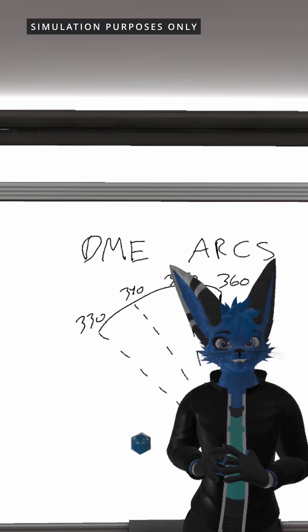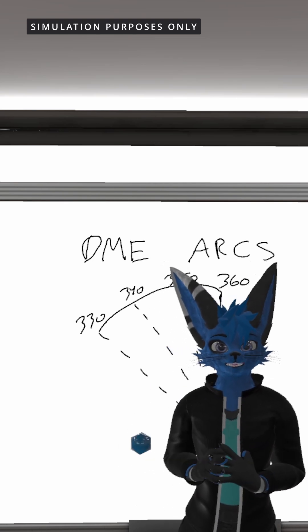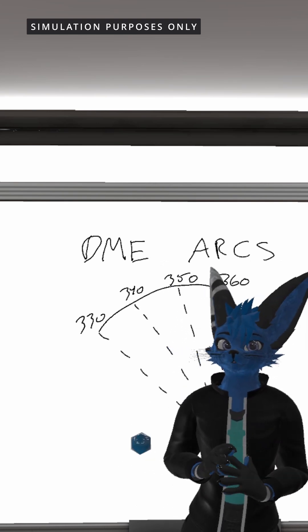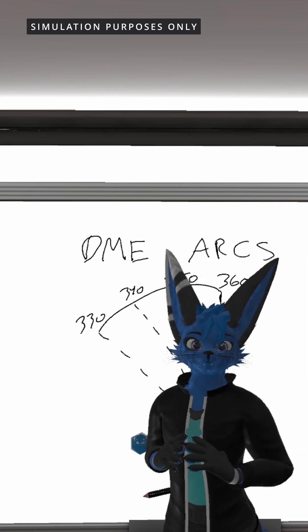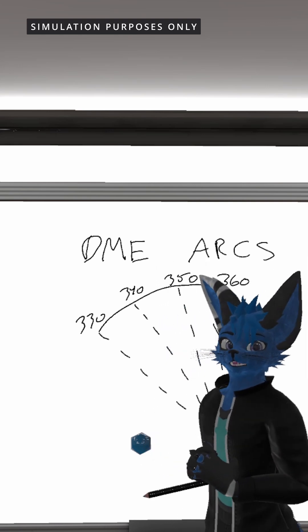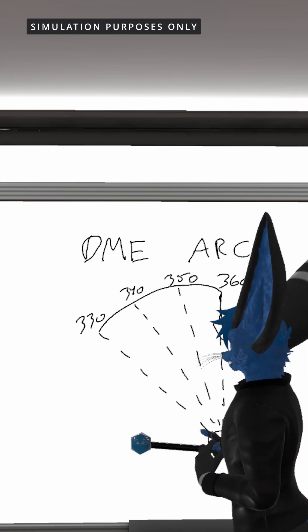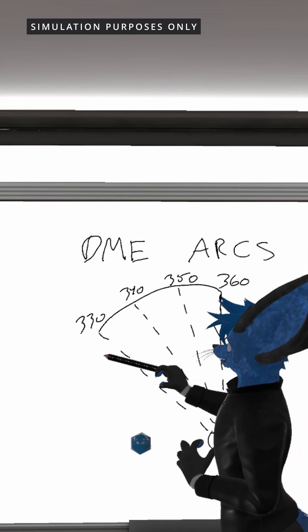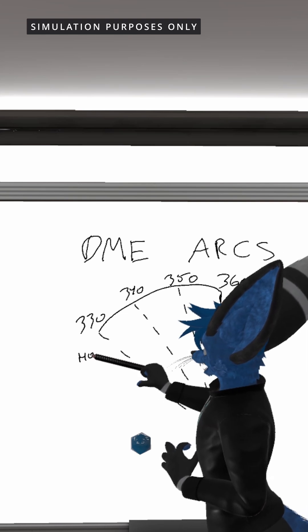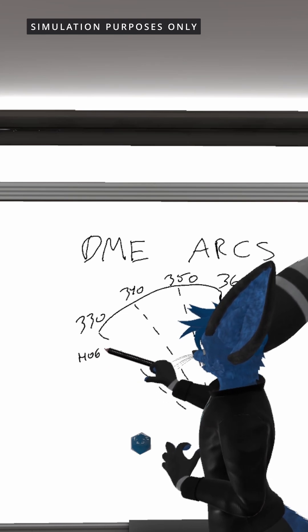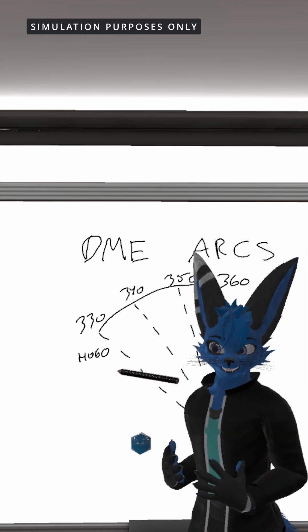When we track the 330 degree radial from this VOR we want to make sure that we are tracking it with a FROM indication. When we intercept the 330 degree radial we are going to turn 90 degrees in the direction of the arc — so in this case we're going to turn to a heading of 060.